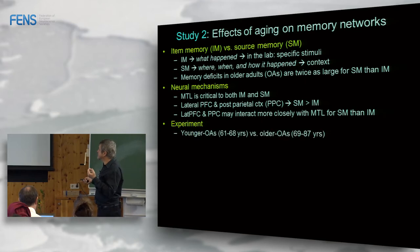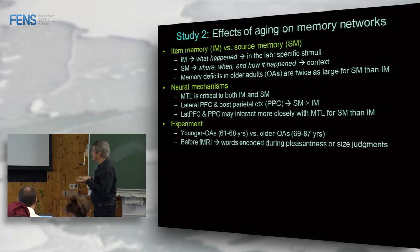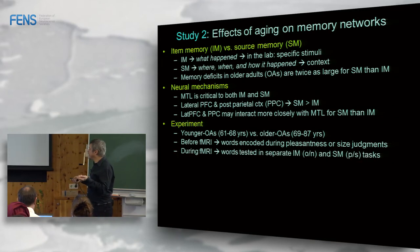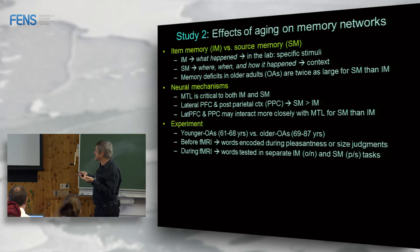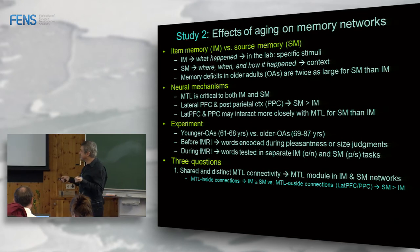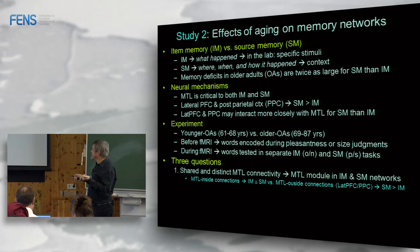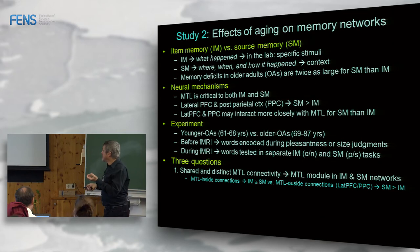Frontal and parietal regions interact more closely with the medial temporal lobes for source memory than for item memory, as shown in fMRI functional connectivity studies. We compared two groups of older adults — younger-old in their 60s and older-old in their 70s and 80s. Before fMRI, participants encoded words during pleasantness or size judgments; during fMRI they were tested in separate item memory blocks (old-new) or source memory blocks, in which they had to decide which of the two tasks they had performed for each word.